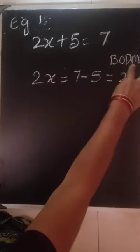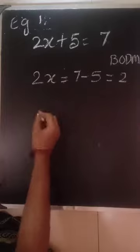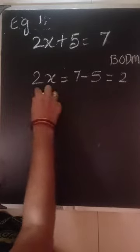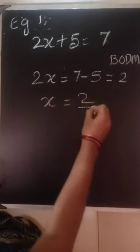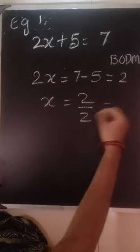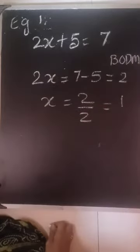Now next we can do the multiplication. 2 is in multiplication with x. So the 2 is going to go to that side. Since it is in multiplication, it will go to division. So the answer will be 2 divided by 2 which is equal to 1.